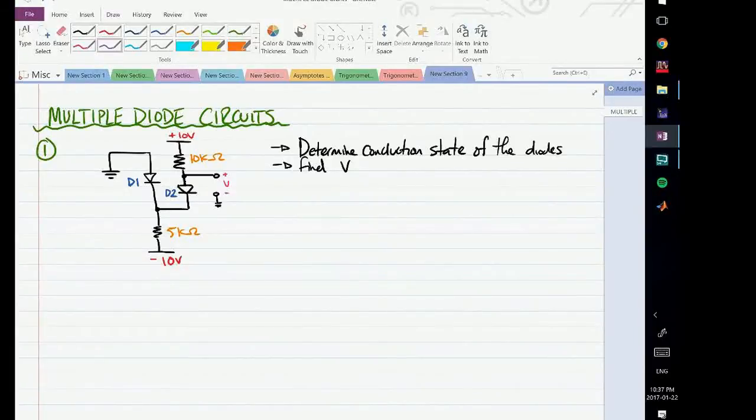Whenever we have a diode circuit where more than one diode is involved, it's usually difficult to determine the operating state of each diode. So the way we approach a problem like this is we assume a certain state for each diode - both on, both off, or one on and the other off - and analyze the circuit under this assumption.